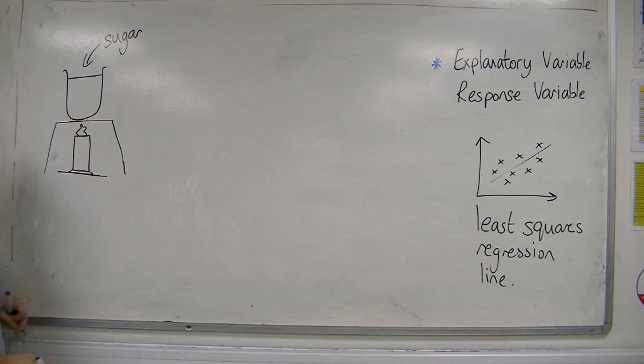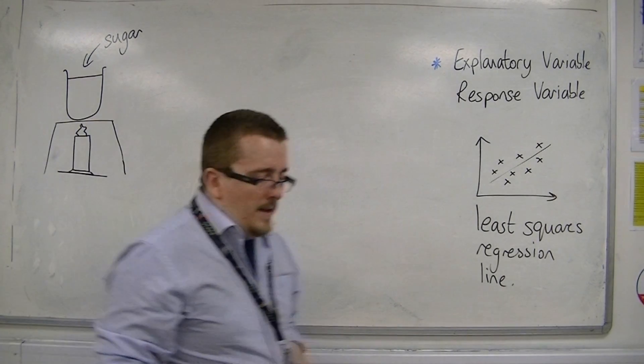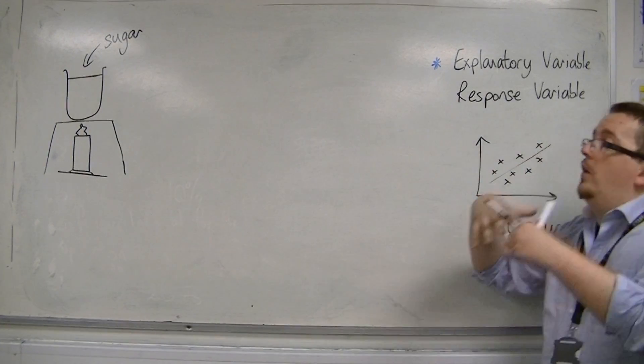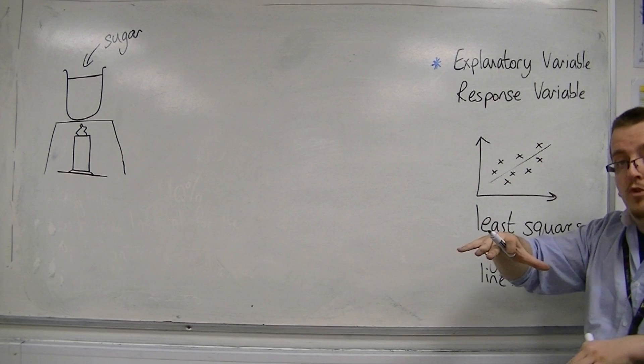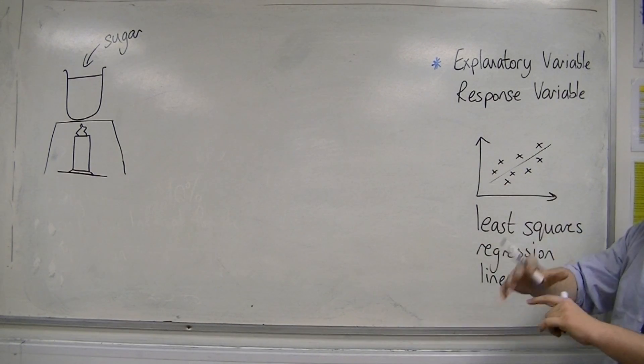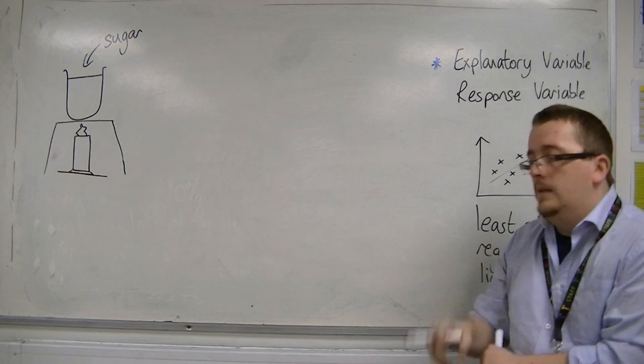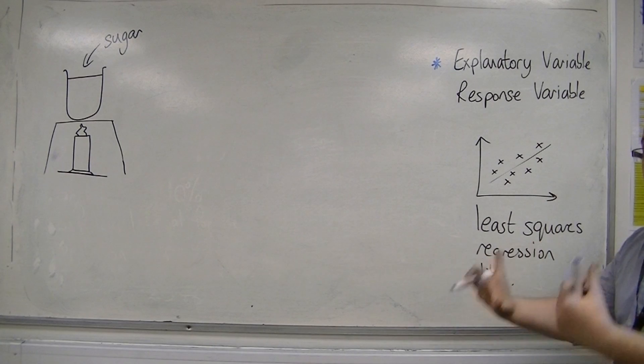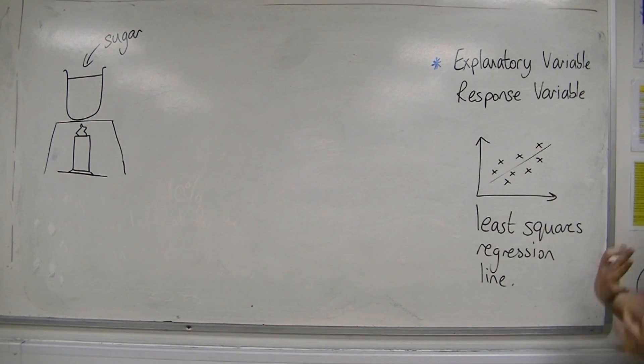There's my poor flame. You might have your Bunsen burner underneath, and you are putting the water at different temperatures. So, the temperature of the water would be your explanatory variable. And the time that it took for the sugar to dissolve would be your response variable.